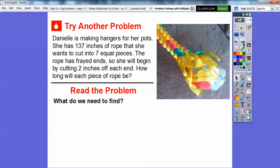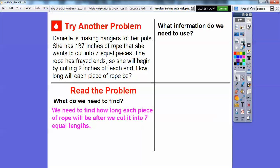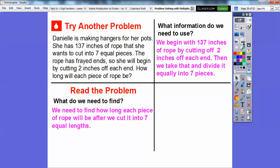How long will each piece of rope be? What do we need to find? We need to find how long each piece of rope will be after we cut it into seven equal lengths. What information are we going to use? We begin with 137 inches of rope and cut off two inches off each end. Two inches off one end and two inches off the other end is four inches off. We'll take that and divide by seven because we're making seven equal pieces.